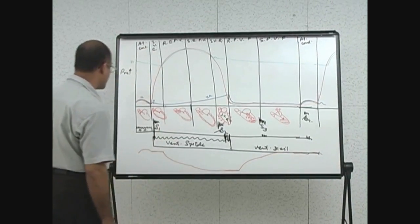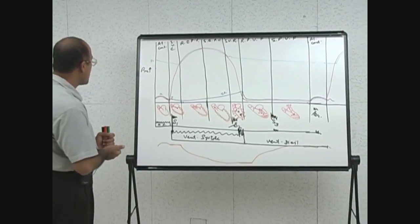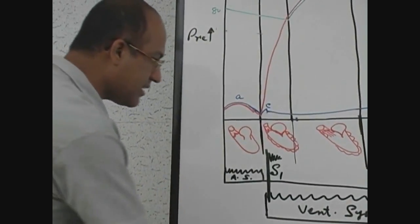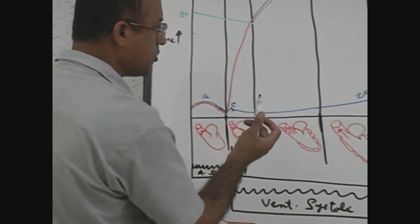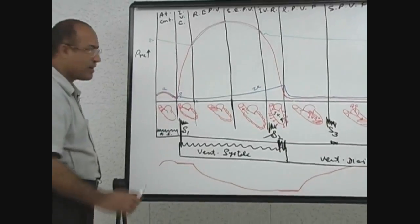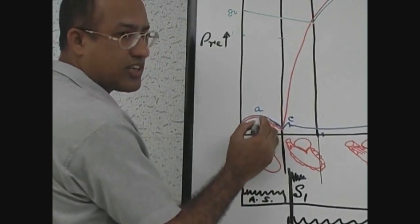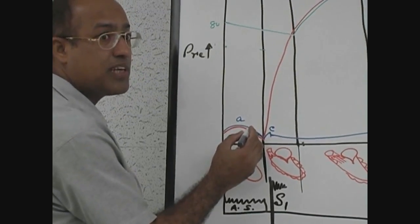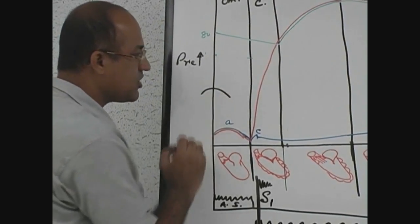Another important point: regarding ECG electrical activity in the heart, the P wave should be just before the A wave. If I draw the ECG here, you can understand that for atrial contraction to occur as a mechanical event, there must be electrical stimulation just before it, so the P wave of the ECG should come before the A wave.